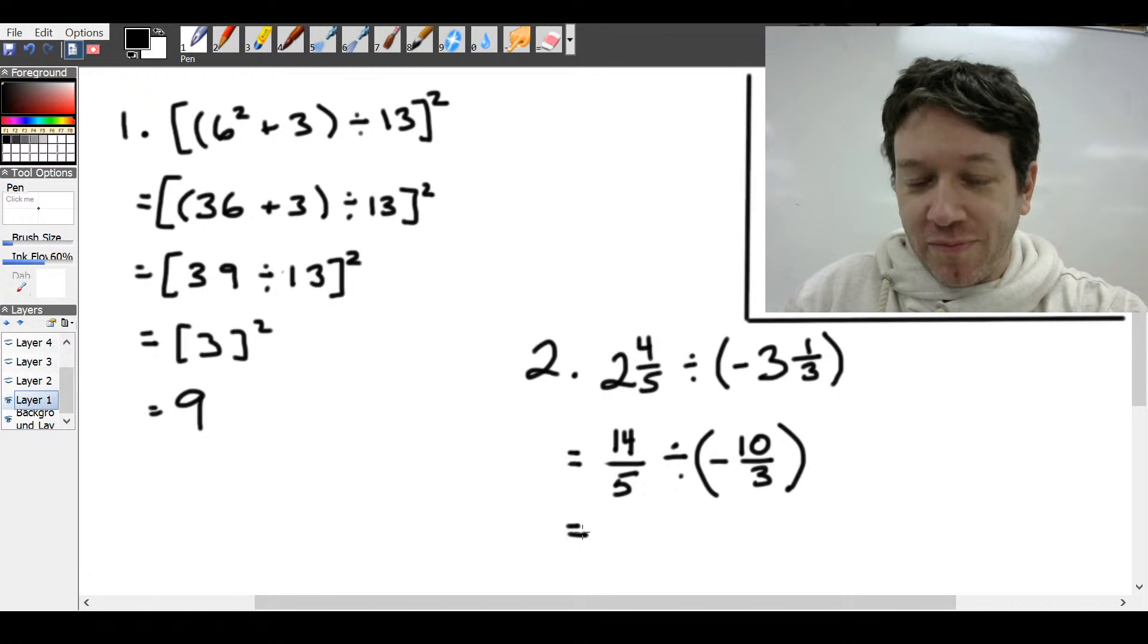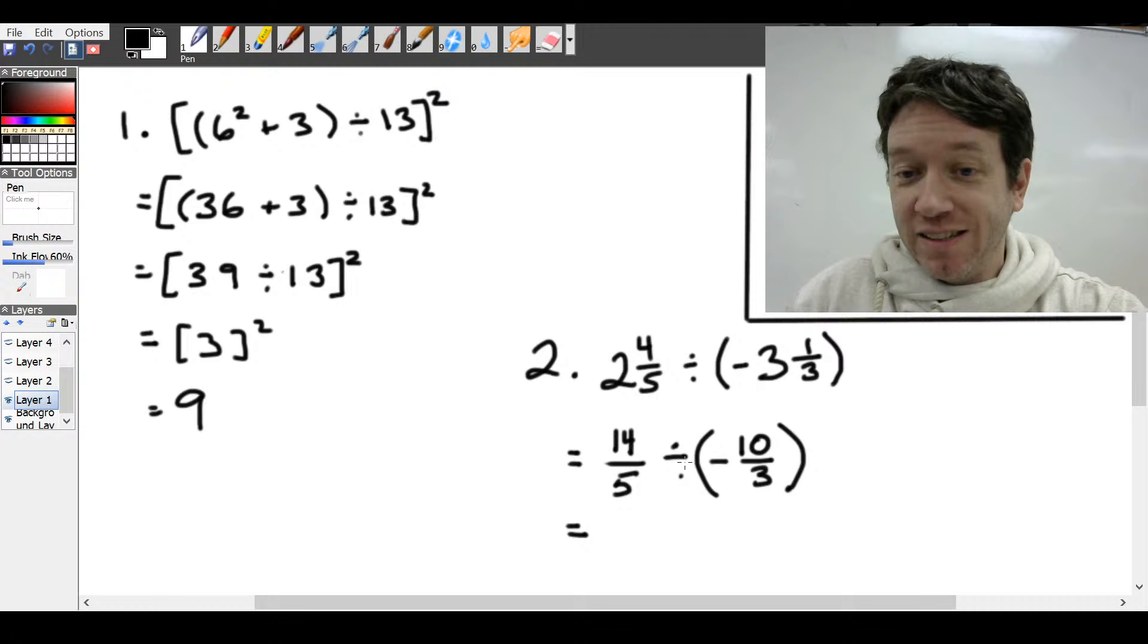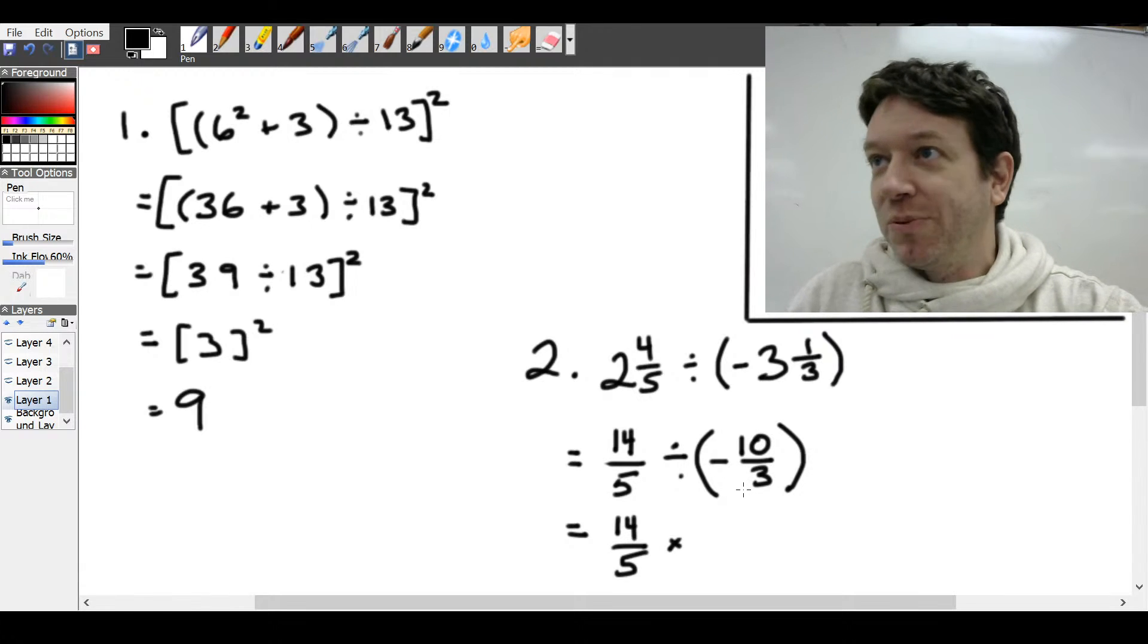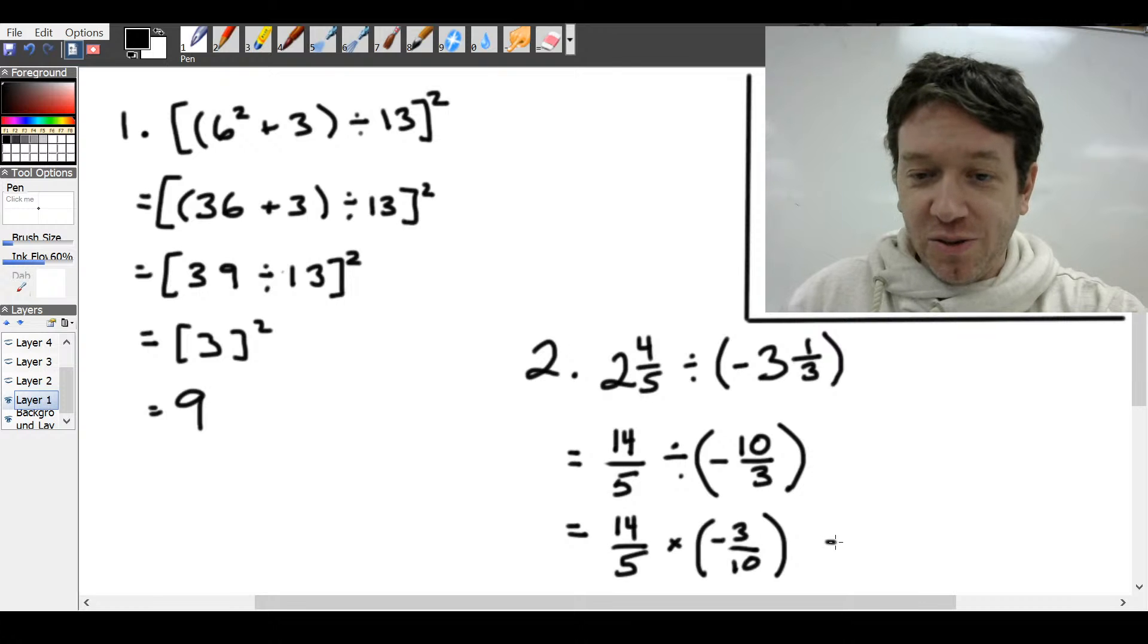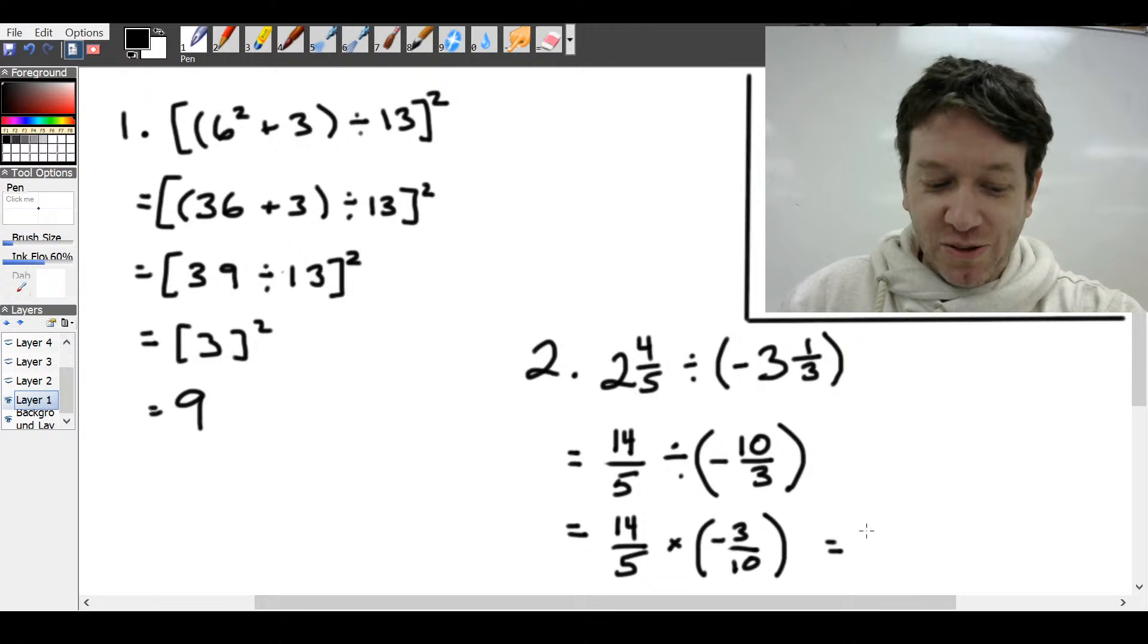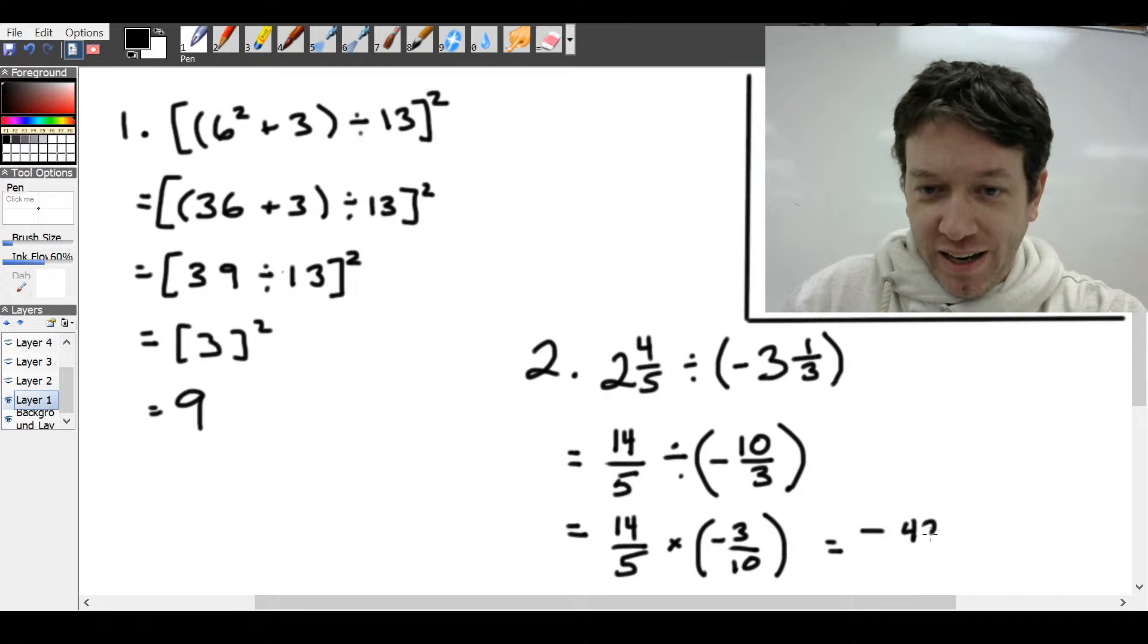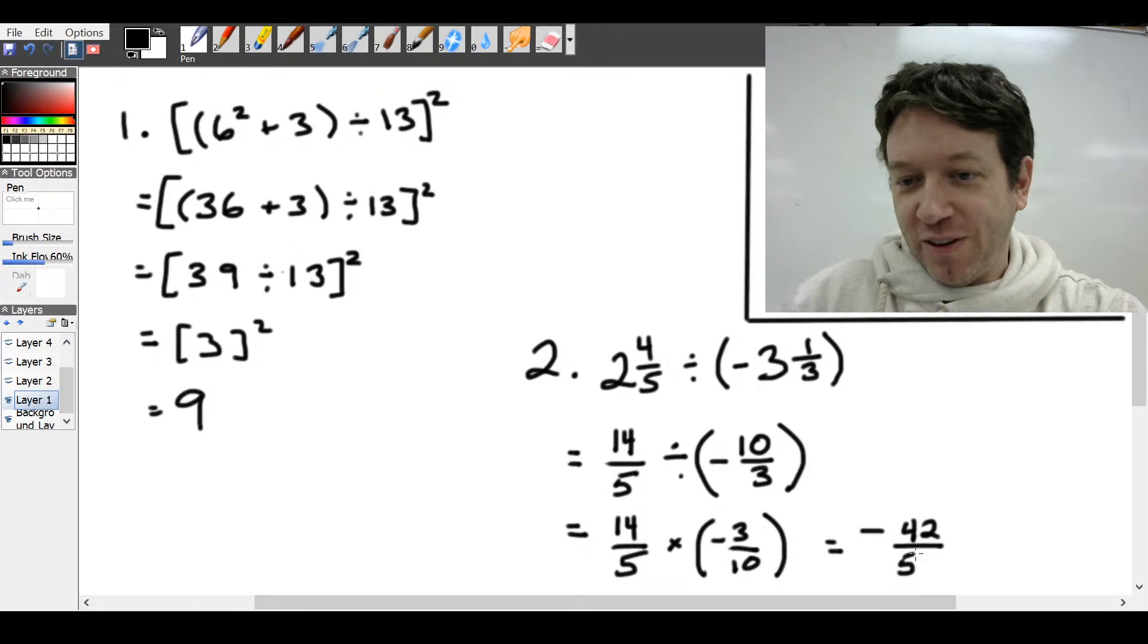Now what we can do in order to divide fractions, what we're going to do is change the division to a multiplication. And I'm going to flip the fraction or take the reciprocal of the fraction. So that leaves us with a negative. It's still a negative number, but it's going to be 3 over 10. All right, so once we're done with that, we have 14 times negative 3, which is going to be minus 42,